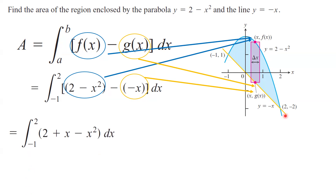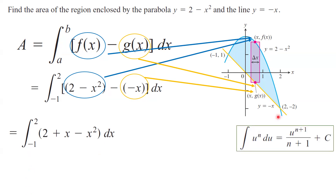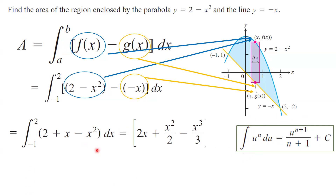How do we calculate this integral? Remember that the integral of u to the power n du is u to the power n plus 1 divided by n plus 1 plus the constant of integration. For a definite integral, you plug in the upper bound b, then plug in the lower bound a, and do the subtraction. The integral of 2 dx is 2x, the integral of x is x squared divided by 2, and the integral of x squared is x cubed divided by 3, with subtraction carried through, evaluated between negative 1 and 2.